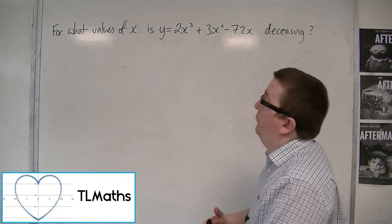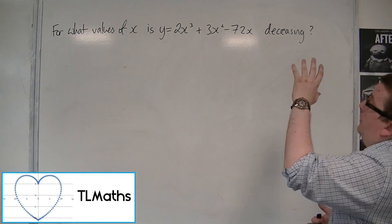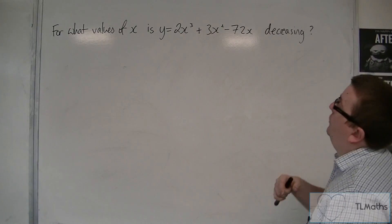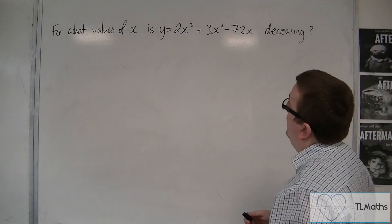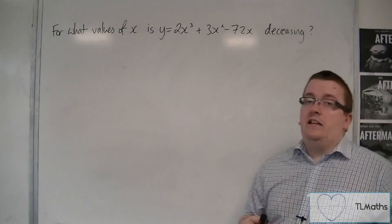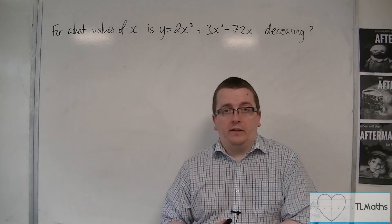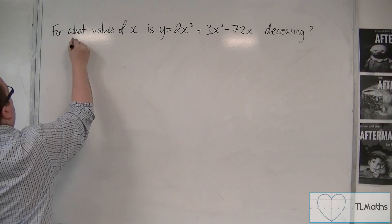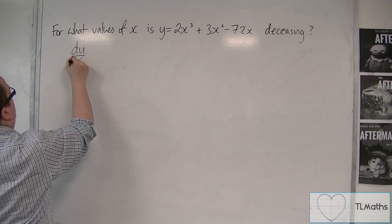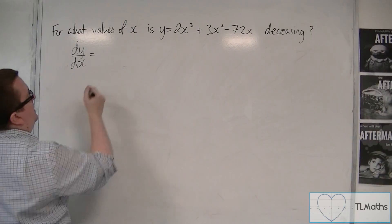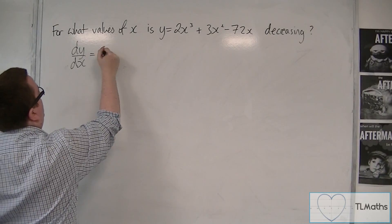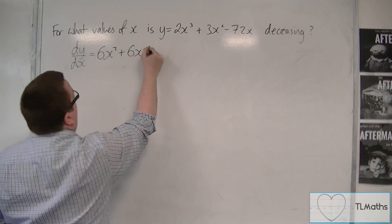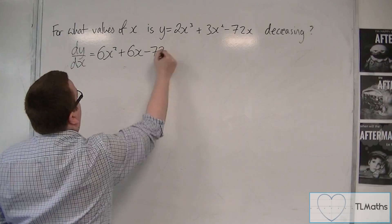We've been asked to find the values of x for which y equals 2x cubed plus 3x squared minus 72x is decreasing. First, find dy by dx. So dy by dx will be 6x squared plus 6x minus 72.